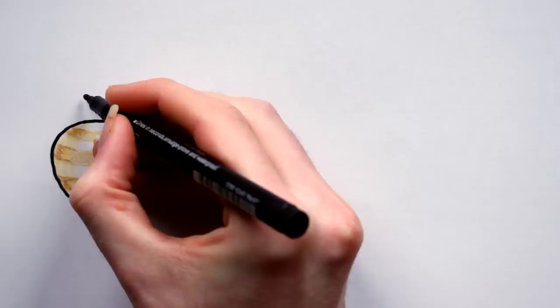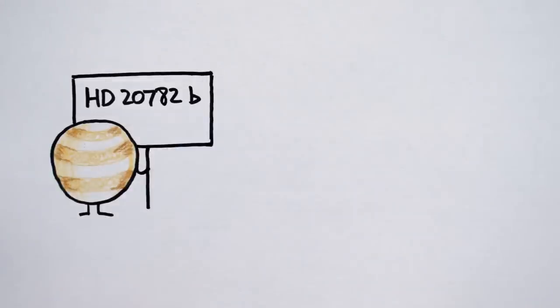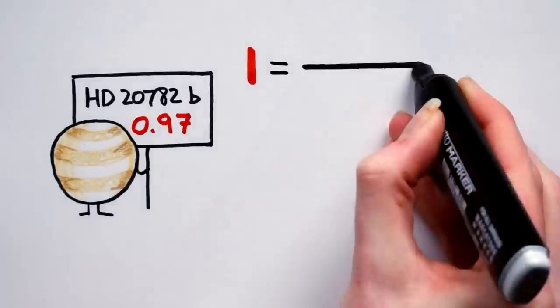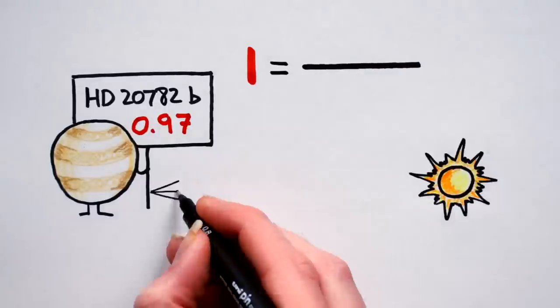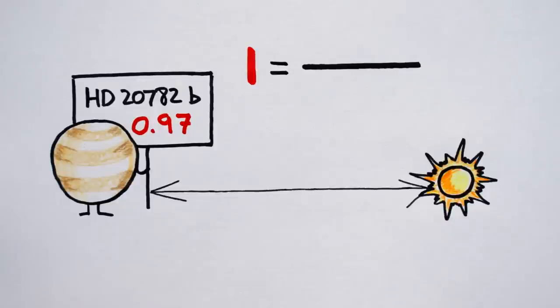HD 20782b is an eccentric Jupiter with an orbital eccentricity of 0.97. Bearing in mind that 1 is a straight line, that figure is pretty mind-blowing. Over the course of its 500-day year, its distance from its parent star goes from 15 million kilometers all the way up to 400 million kilometers.